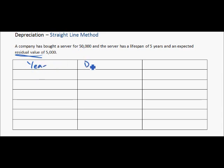Then we put depreciation, so how much it depreciates. And then we will put the book value. Book value shows the value of the asset as shown on the balance sheet.